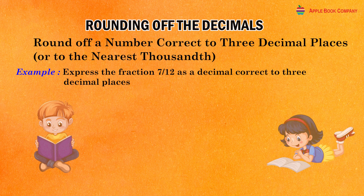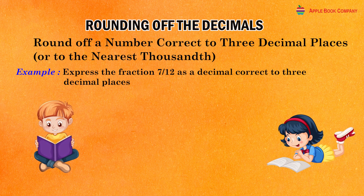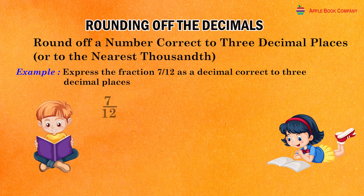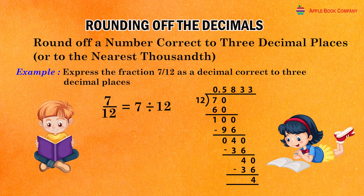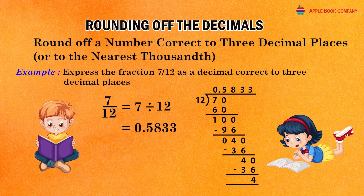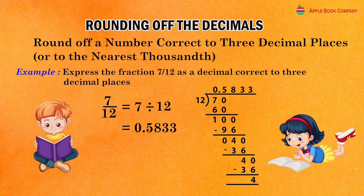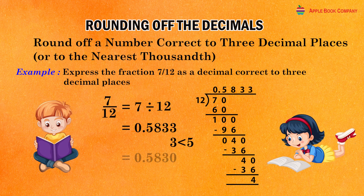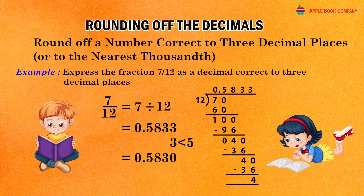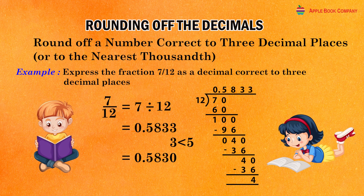Example: Express the fraction 7/12 as a decimal correct to three decimal places. We have 7/12 equal to 7 divided by 12, which is equal to 0.5833. Here, the digit at the fourth decimal place is 3 which is less than 5. Hence, 7/12 is equal to 0.5830, correct to three decimal places.